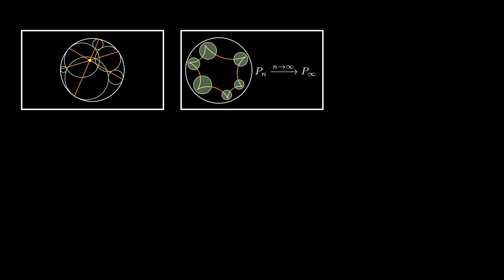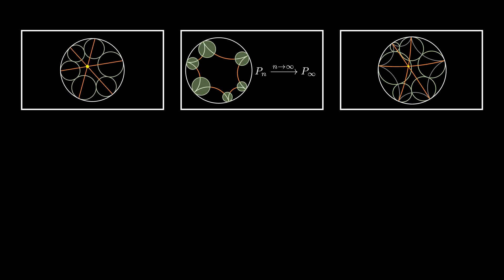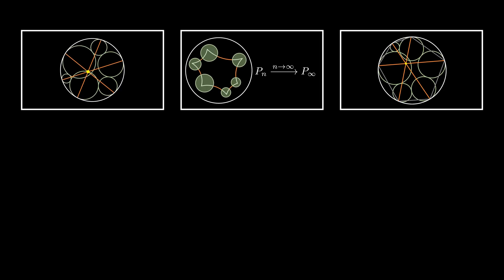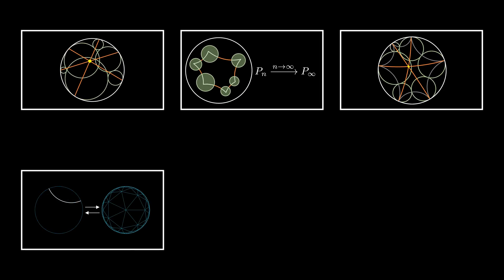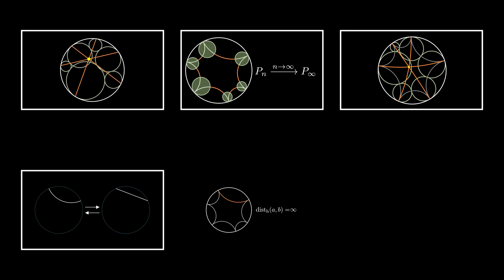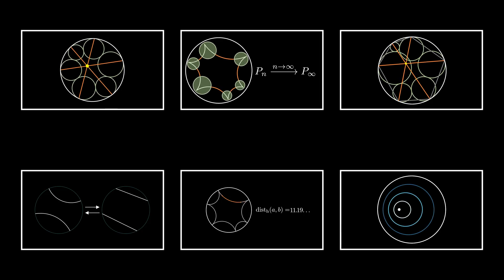Today we will take a look at the so-called seven circles theorem. While the statement of the theorem can be expressed in simple geometric terms, the method we will use to prove it delves into seemingly unrelated concepts from hyperbolic geometry. It involves a surprising change of perspective between Euclidean and hyperbolic space. On the way we will learn about two different models of hyperbolic space, how distances are measured, as well as circles and polygons in this hyperbolic setting.